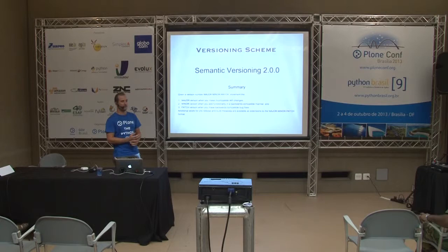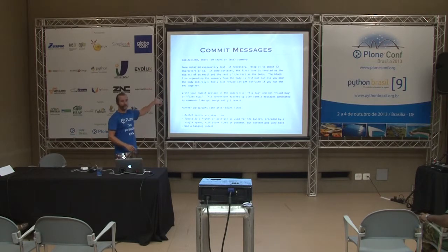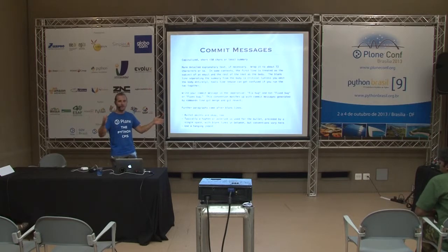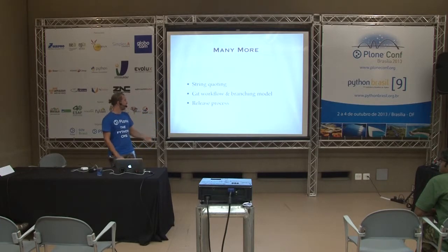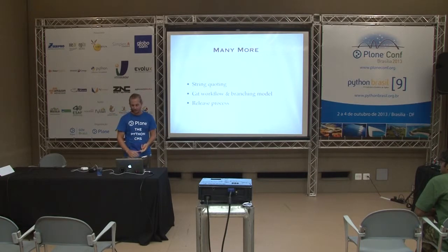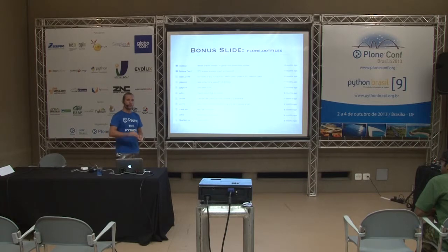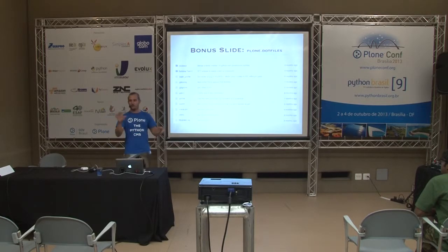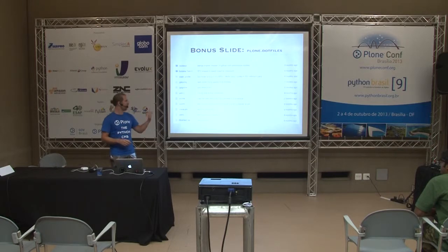The suggested versioning scheme is semantic versioning 2.0.0 - you can look it up. For commit messages, we just link to Tim Pope's recommendation: starting with a title up to 72 characters, then the full body. There's also guidance on string quoting, how to use Git effectively, how to branch, and how to have a good release process. When you scroll through the convention guide, you see a reference to a repository in the Plone organization on GitHub called plone.dotfiles, where various Plone developers exchange their dotfile tips and tricks.